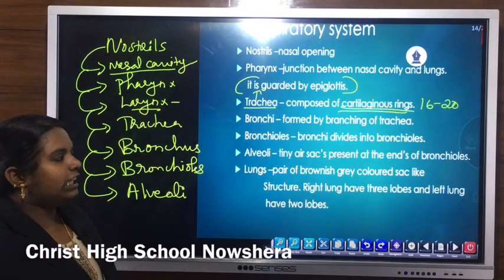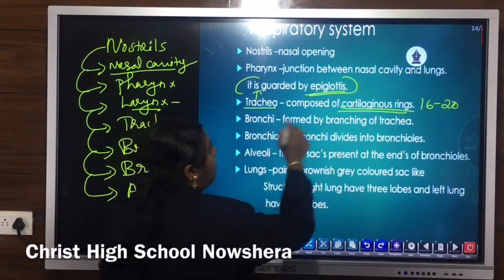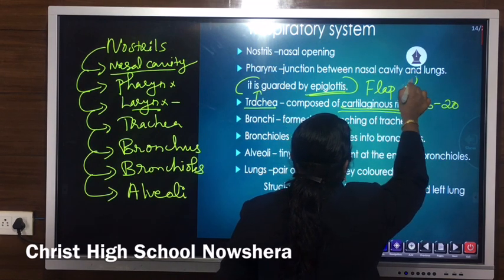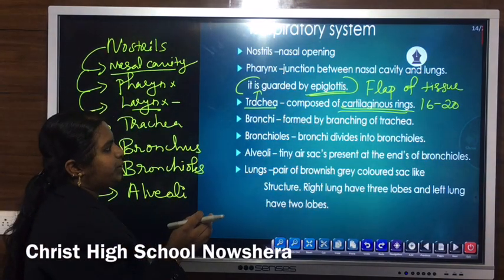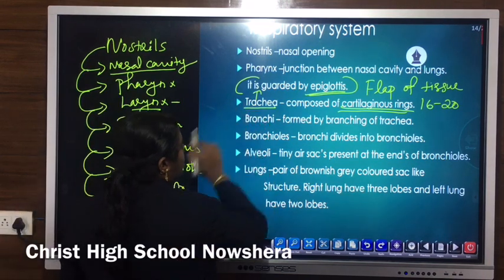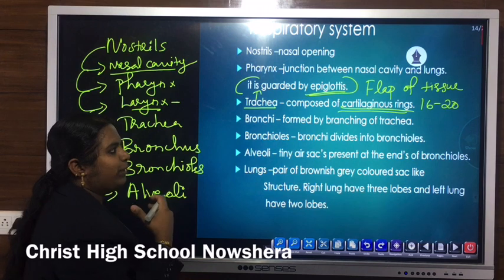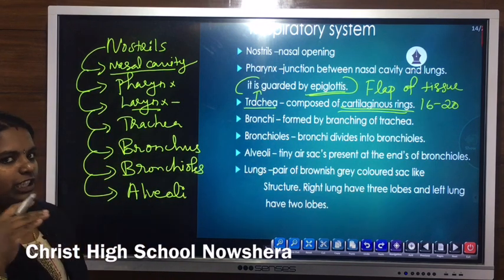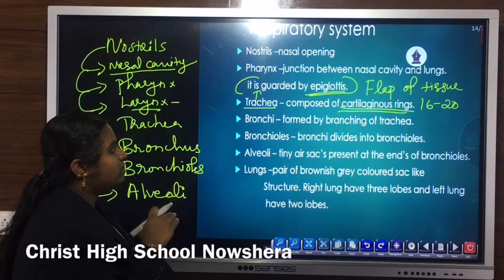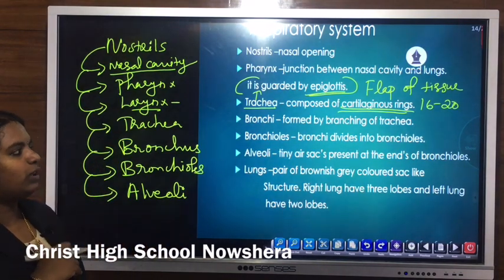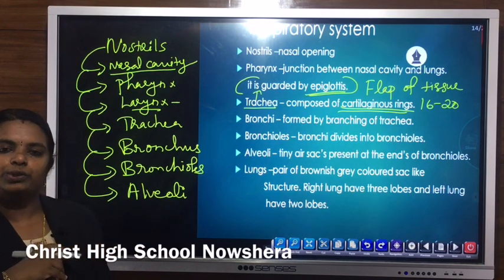Another important structure related to the trachea and respiratory system is the epiglottis. The epiglottis is a flap of tissue which covers the trachea during swallowing of food — otherwise food may enter the trachea or windpipe. The epiglottis prevents the entry of food into the windpipe by closing the trachea during swallowing.